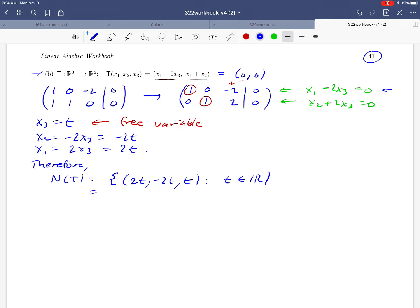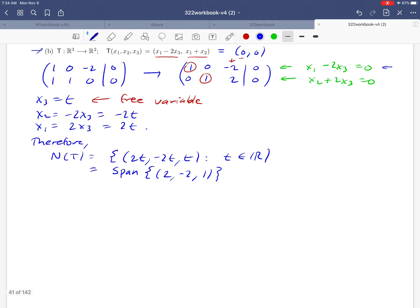And notice that that set is just the span of the single vector 2, negative 2, 1. If we factor the t out of there, we get that. And so we can look at that calculation and notice that we only need one vector to get a basis for the null space of T. We just need this.